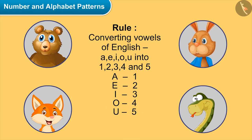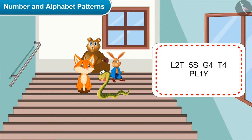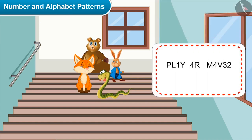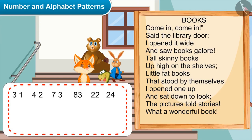Oh wow! This is quite easy and our other friends don't even know about this. Can you decode the message I have written? Kids, you can pause the video to decode the message. We have converted 2 into E, 5 into U, 4 into O, and 1 into A. We have also converted 3 into I and 2 into E. So now we can text each other using this code.